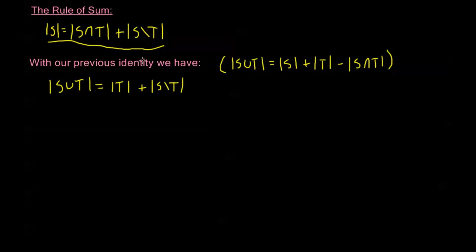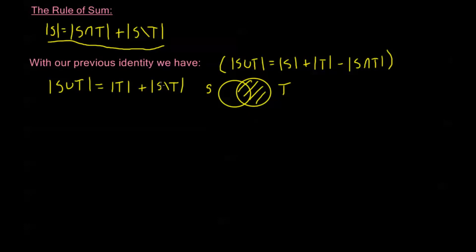This makes sense: S∪T contains all elements in S or T without any repetition. In a Venn diagram, if this is my S and this is my T, the first term |T| counts all elements in T, and the second term |S − T| counts all elements in S that are not in T, so there's no double counting of the intersection. This properly counts the union S∪T.